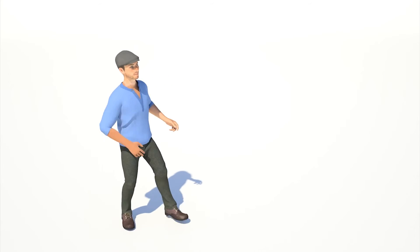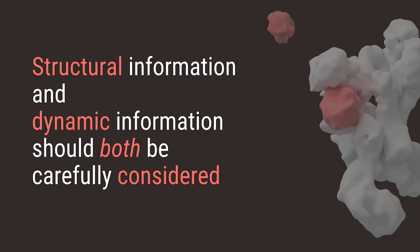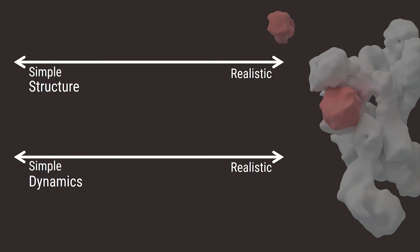So my point with this analogy is that in addition to structural information, visualization of dynamic information should be carefully considered. We saw with this ball throwing analogy three animations across two spectrums. We had simple structure and simple dynamics, realistic structure and simple dynamics, and realistic and realistic.